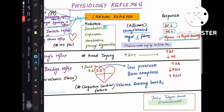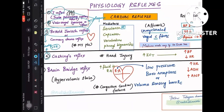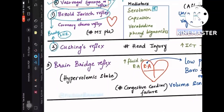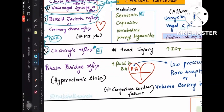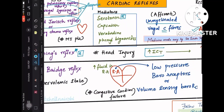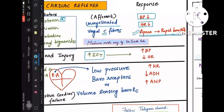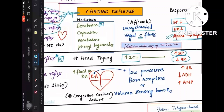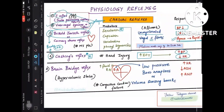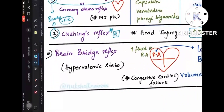Cushing's reflex is the most famous and most frequently asked. It is seen in head injury patients with increased intracranial tension or intracranial pressure, which leads to increased BP and decreased heart rate. So in Cushing's reflex: increased BP and decreased heart rate.